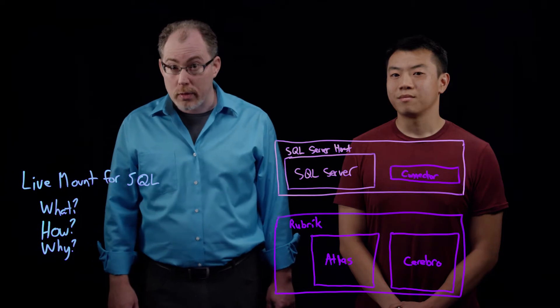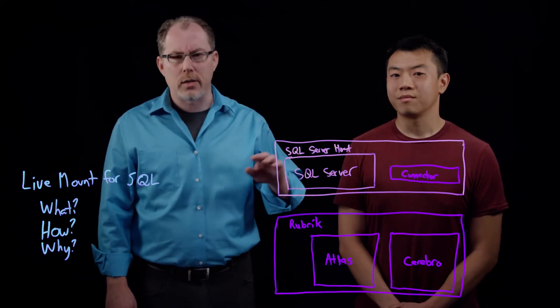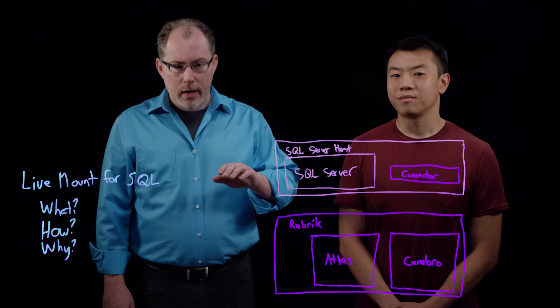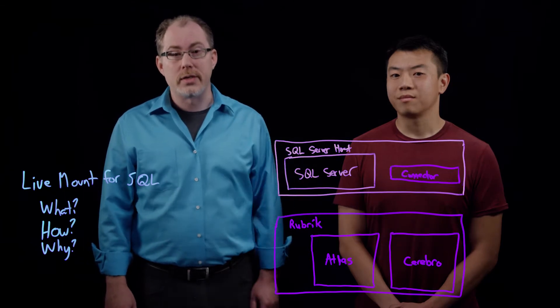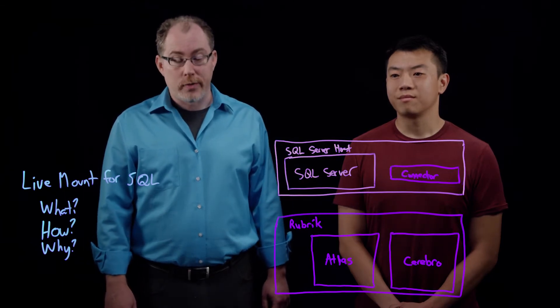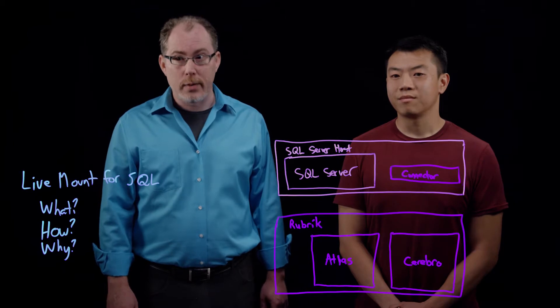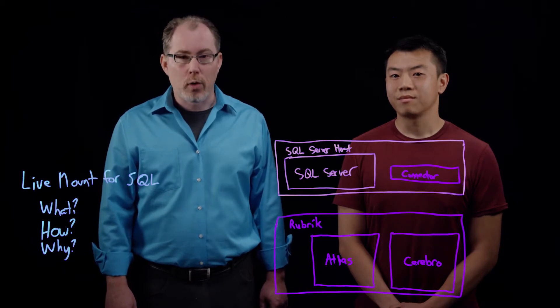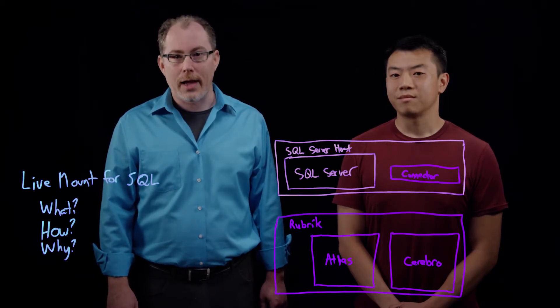This is similar to VMware LiveMount, but not quite the same in that we're using SMB v3 rather than NFS. Where it is similar, though, is in its simplicity. As we've added more features to Rubrik, we've tried to keep them simple to use. And it leverages our underlying Atlas file system to promote blocks to flash for performance.